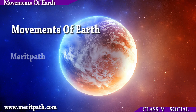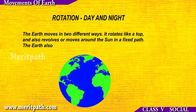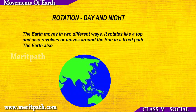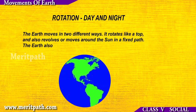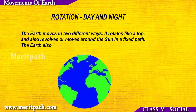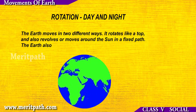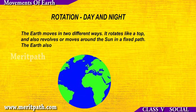Movements of Earth: The earth moves in two different ways. It rotates like a top, and also revolves, or moves around the Sun, in a fixed path.